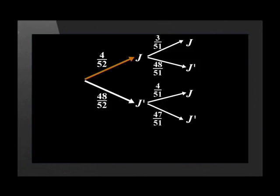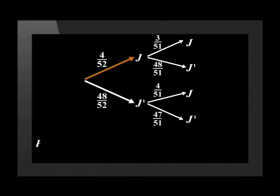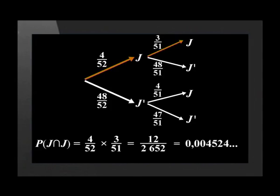Let's look at the first draw. The probability of a jack on the first draw plus the probability of not a jack on the first draw is 4 over 52 plus 48 over 52, which equals 1. You can check the rest of the probabilities in the same way. Now that we have drawn the tree and confirmed the probabilities on each pair of branches add up to 1, we can answer the questions. The first question asks us to find the probability of getting two jacks. This is only possible if we get a jack on the first draw and a jack on the second draw. Therefore, that will be 4 over 52 times 3 over 51, which is approximately 0.004. Remember, when we go along the branches, we multiply the probabilities together.